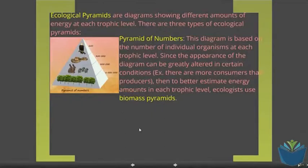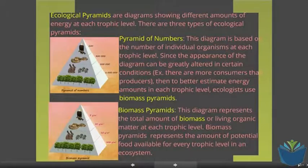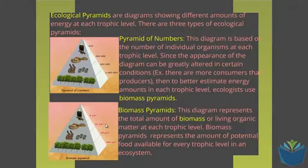Another type of pyramid that is slightly better than that is a pyramid of biomass. Biomass takes into account the living material found at each trophic level. This is better than the pyramid of numbers and usually it is measured in grams per metre squared.